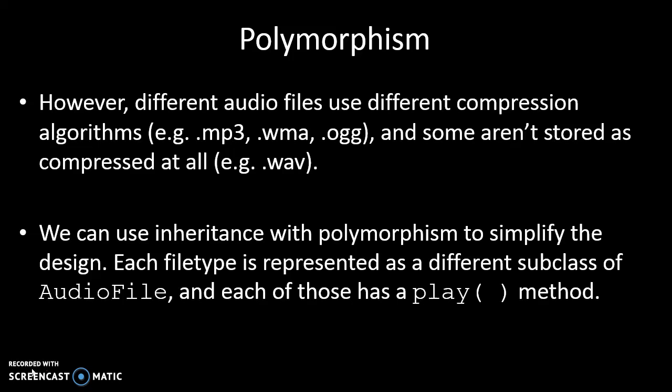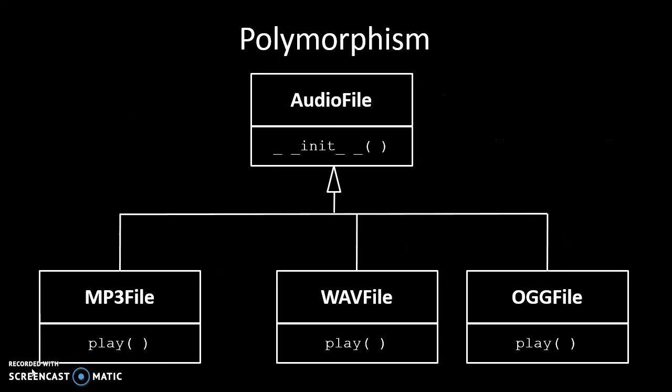A handy way of thinking about this is to use inheritance to create the polymorphism element — starting with a superclass called AudioFile, and creating subclasses that represent the various audio file types. In this UML diagram, AudioFile has one method, the __init__ method, and the triangle underneath means the classes below inherit from it. So we have MP3File, WAVFile, and OGGFile, and they all have their own version of a method called play. They also have the __init__ method because they inherit that from AudioFile, the superclass.